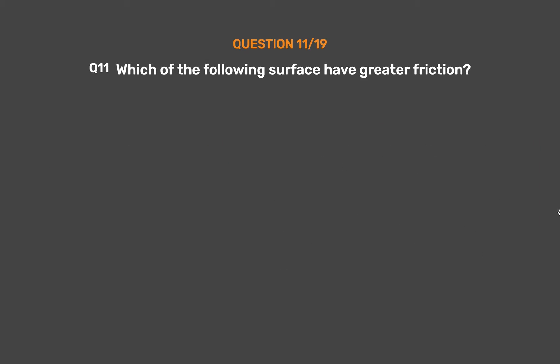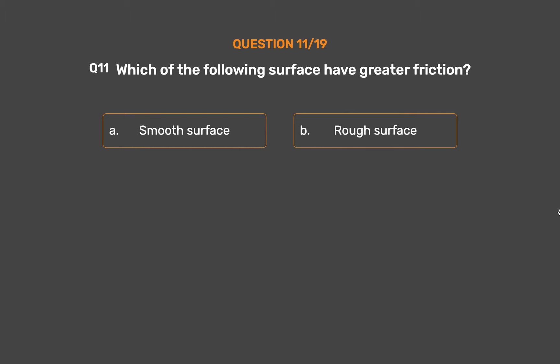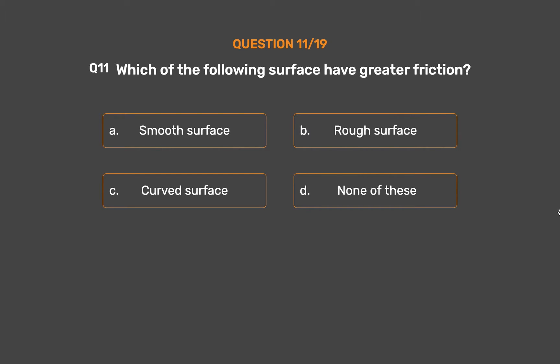Question number 11. Which of the following surfaces has greater friction? Option A: Smooth surface. Option B: Rough surface. Option C: Curved surface. Option D: None of these.